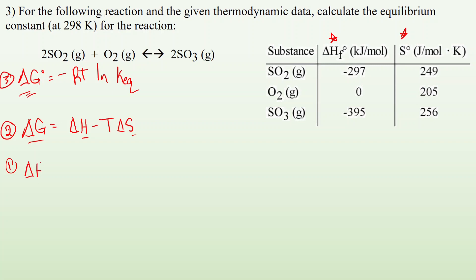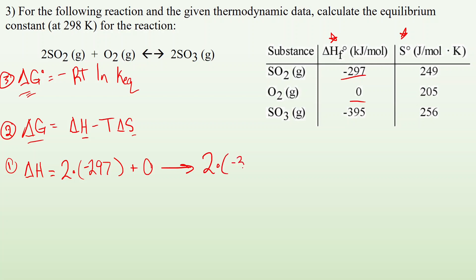Starting with the change in enthalpy for the reaction 2SO2 + O2 → 2SO3: for the reactants I have two times delta Hf of SO2, which is two times negative 297 kilojoules per mole, plus delta Hf of O2, which is zero. For products: two times delta Hf of SO3, which is two times negative 395. Doing products minus reactants, I get delta H equals negative 196 kilojoules per mole.